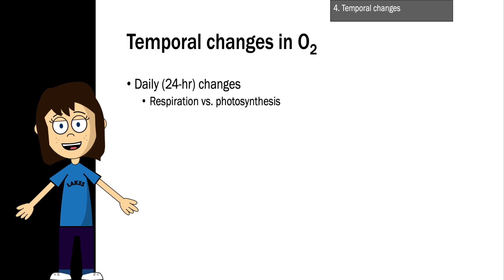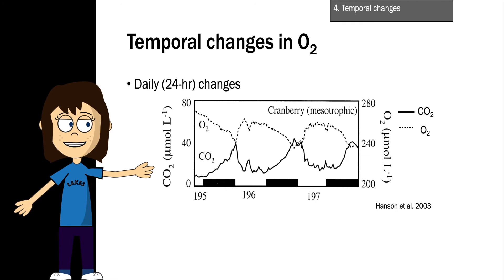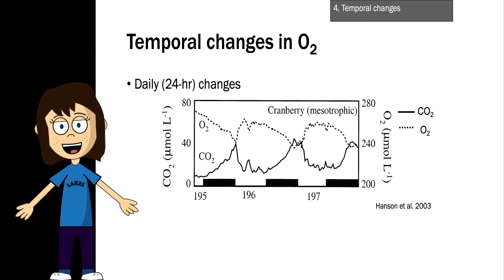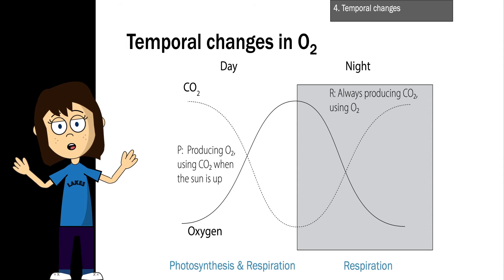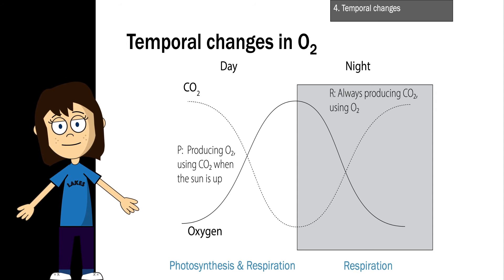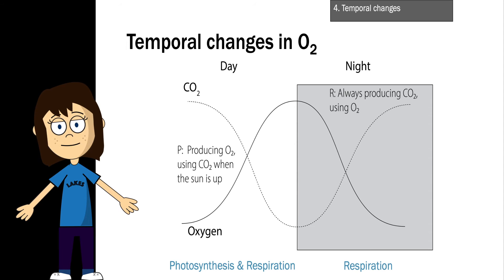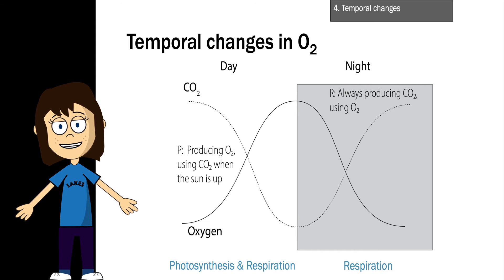Now let's look at temporal changes in oxygen over a 24-hour cycle. Changes at this timescale are a result of respiration versus photosynthesis. Here's a plot of surface carbon dioxide and oxygen concentrations from Cranberry Bog in Wisconsin over three days. You can see CO2 concentrations increasing at night and decreasing during the day, while oxygen concentrations decrease during the night and increase during the day. During the day, algae photosynthesize, producing oxygen and consuming carbon dioxide. At night, photosynthesis shuts down and cellular respiration dominates, so CO2 increases and oxygen decreases. On a bright sunny day, this process is very evident in the surface concentrations.